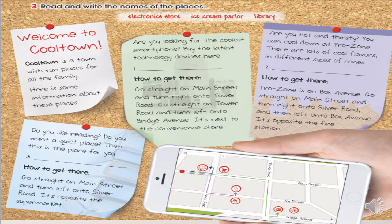Open your book, page number 43, activity number 3. Read and write the names of the place. Vamos a abrir nuestros libros y nos vamos a ubicar en la página número 43. Vamos a leer y vamos a escribir los nombres de cada lugar. Tenemos en esta parte donde dice electronic store, ice cream parlor and library. Esas palabras las vamos a escribir donde tenemos los números number 1, number 2 and number 3. Pero primero van a seguir conmigo la lectura.